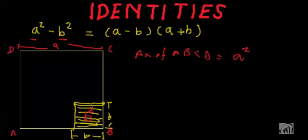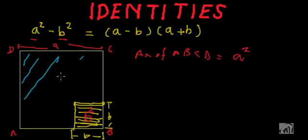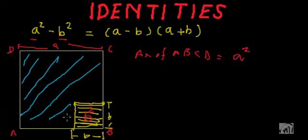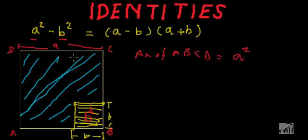So what we want to find is A² - b², which is the area of the bigger square ABCD minus the area of the smaller square. The remaining area — this whole area — is A² - b², which is nothing but the area shaded in blue.